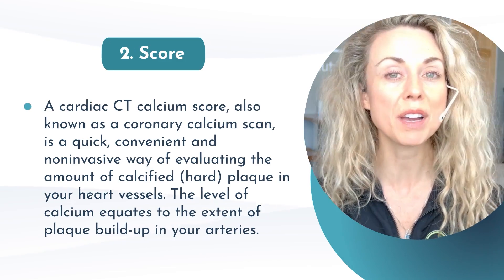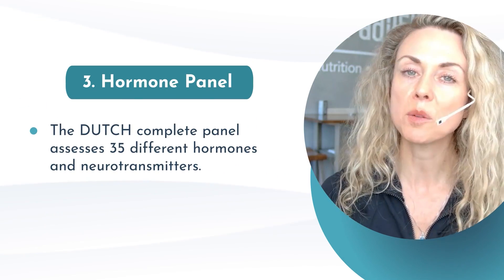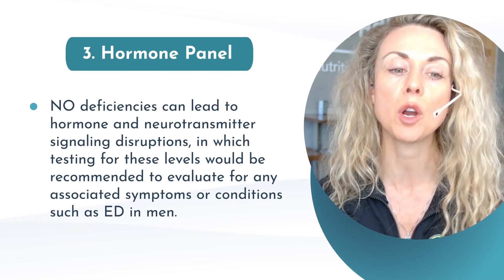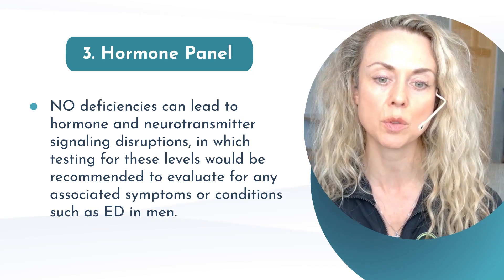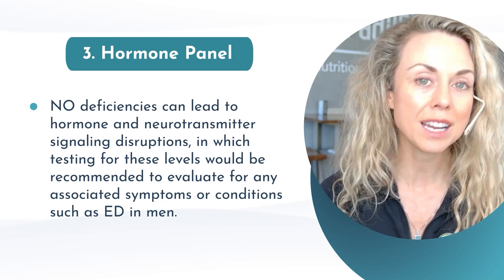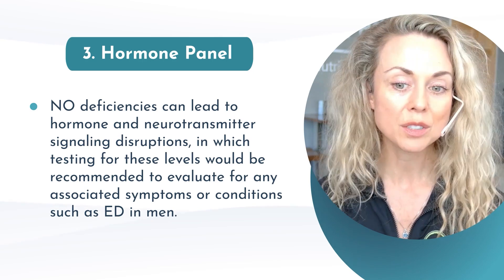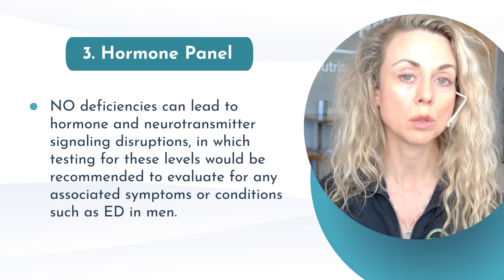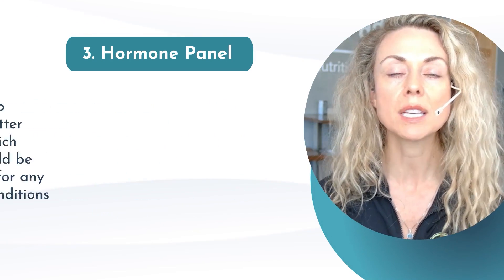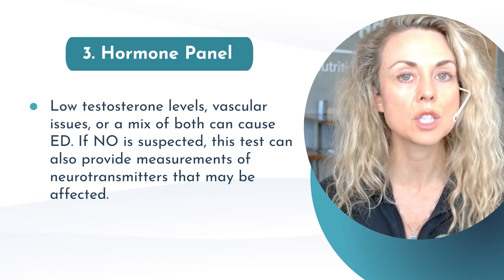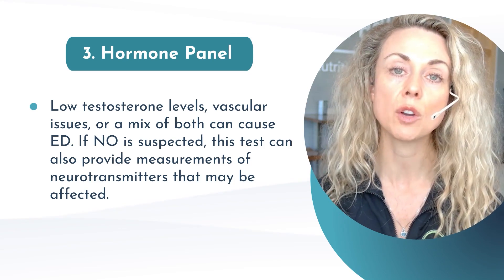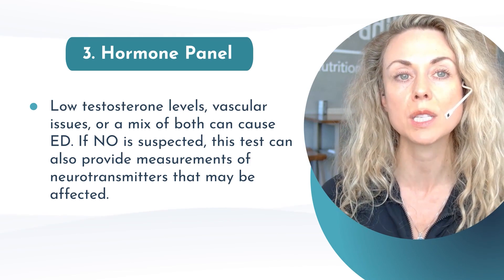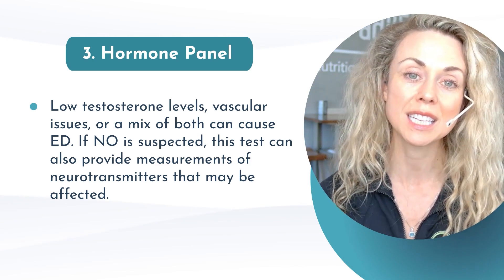The Dutch test is a hormone test — a complete panel assessing 35 different hormones and neurotransmitters. Nitric oxide deficiencies can lead to hormone and neurotransmitter signaling disruptions, so this test is highly recommended for evaluating erectile dysfunction in men, and for women experiencing low libido, low blood flow, or vaginal dryness. Low testosterone levels, vascular issues, or a combination of both can cause erectile dysfunction. If nitric oxide is suspected, this test can provide measurements of hormones and neurotransmitters that may be extremely valuable.